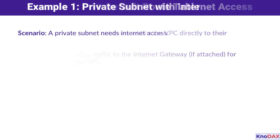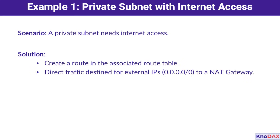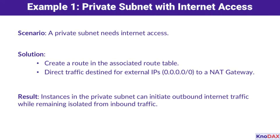Here's a common scenario: you have a private subnet, but it needs internet access. The solution? Add a route for external IPs — CIDR block with all zeros — to a NAT gateway in the subnet's route table. This setup allows outbound internet traffic while keeping your instances shielded from inbound requests.